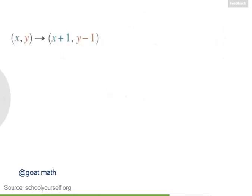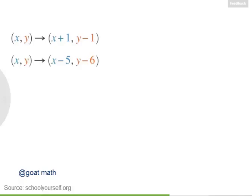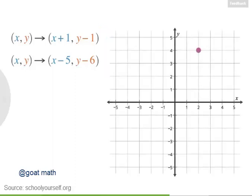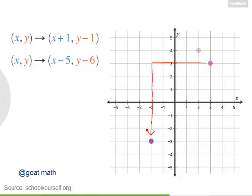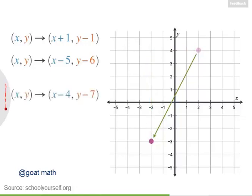Next, suppose you perform one translation and then you perform a second translation. What does this mean? Well, let's pick a starting point. The first translation is adding one to the x-coordinate and subtracting one from the y-coordinate. Then the second translation is subtracting five from the x-coordinate and subtracting six from the y-coordinate. So you can think of these two translations as being a single translation — going from start to finish, you had to move four units left and seven units down.